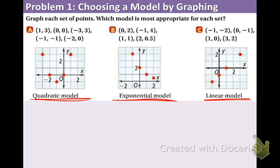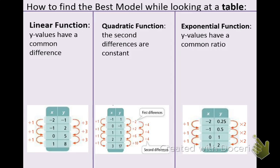So far we have looked at graphs and plotting points. Now we're going to be looking at tables. XY tables which I know you have been accustomed to in the past. How do you find the best model while looking at a table? We're still focusing on the three functions linear, quadratic, and exponential. There are some ways that you can figure out what kind of function each is.